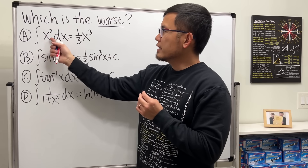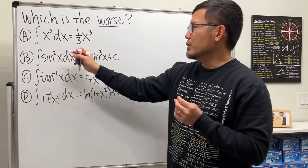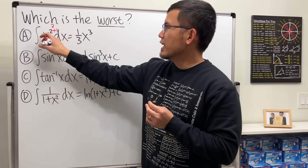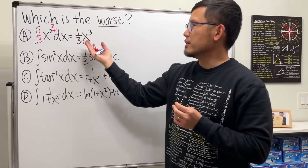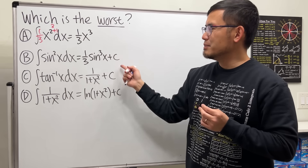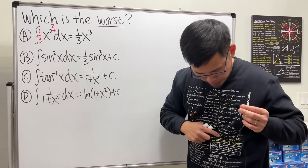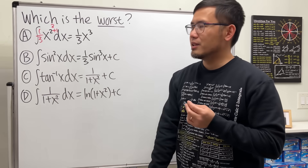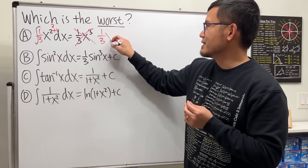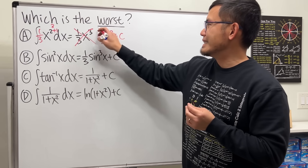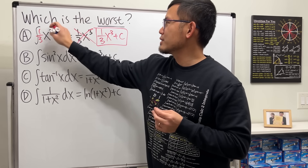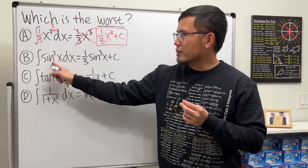Integral of x² dx — well, we use the reverse power rule: raise the power to 3 and divide by the new power, giving us one third. But what's wrong with this? It's missing the plus C. I said don't forget the plus C, so this is technically wrong. It should be one third x³ plus C.